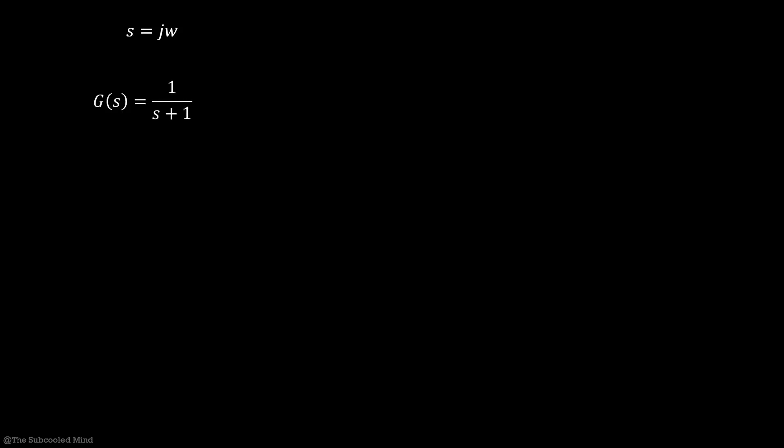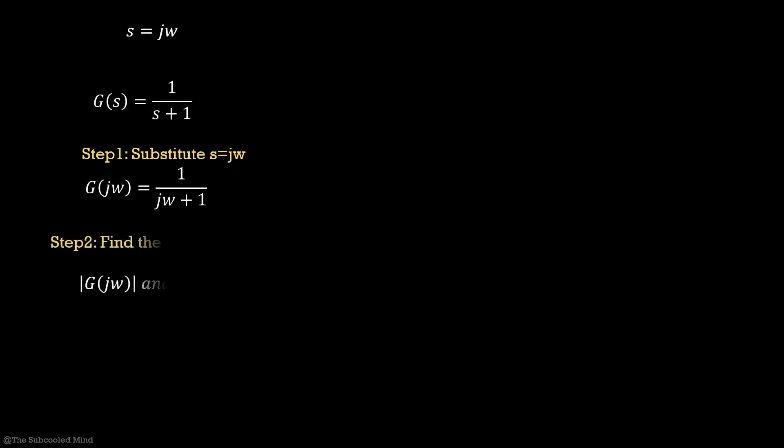The way we find these plots is by substituting s equal to jω in a transfer function. For example, if a transfer function is G(s) = 1/(s + 1), then G(jω) = 1/(jω + 1), and now we can find the magnitude and phase of this complex number.